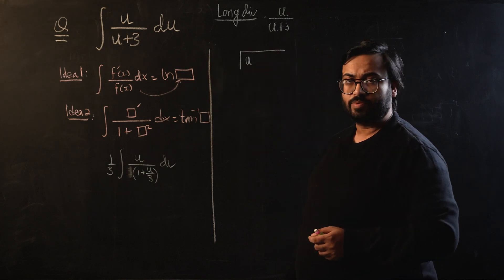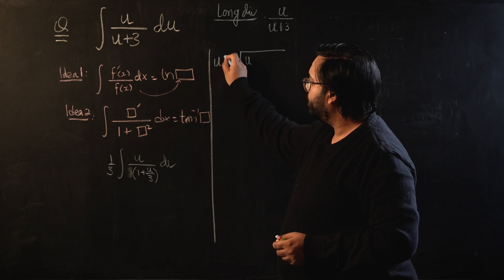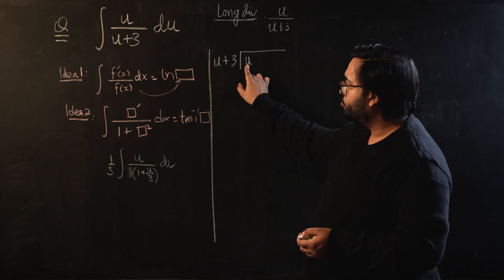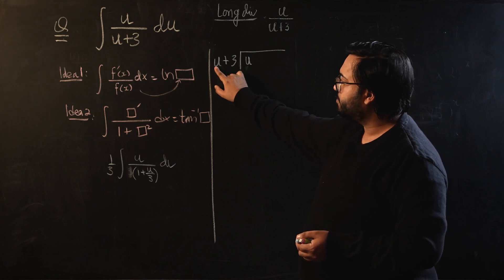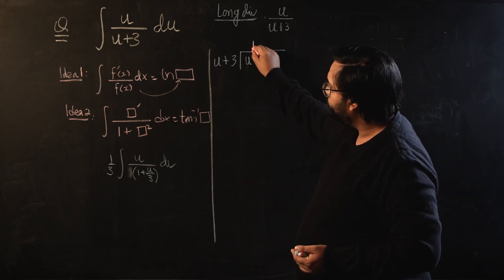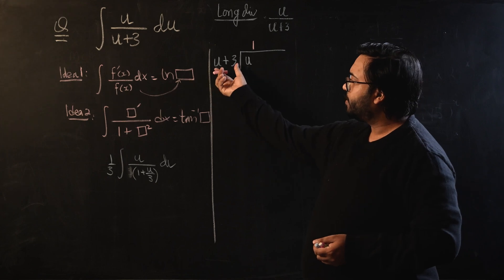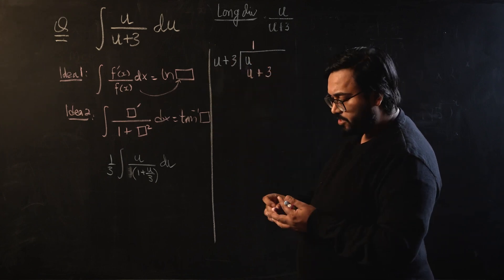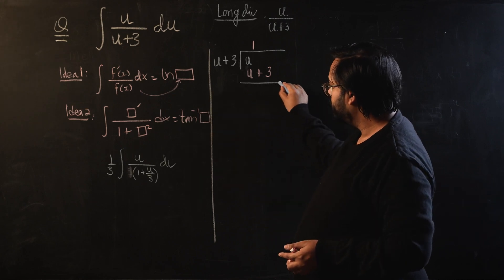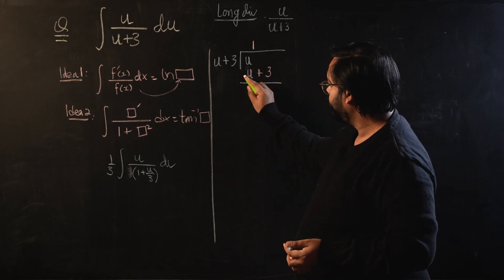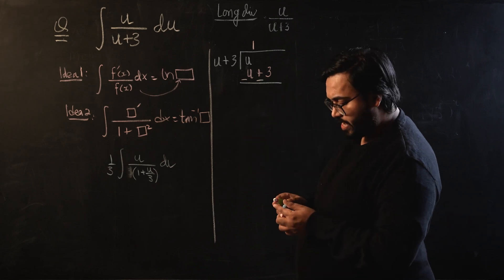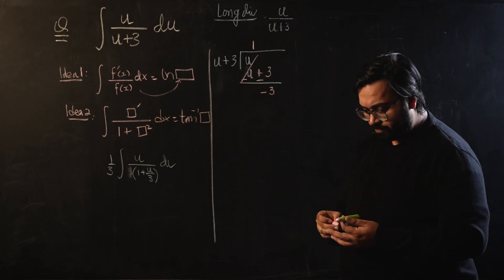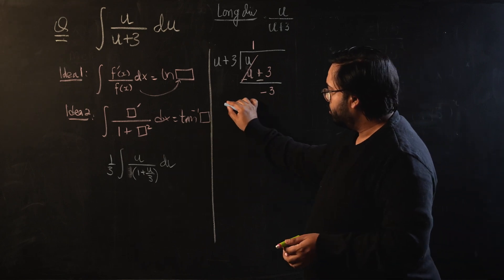I have u in the numerator and u+3 in the denominator. First of all, let's decide the quotient. Quotient is always inner first term divided by outer first term, so I know that the quotient is going to be 1. Let's multiply the divisor with the quotient, that will give us u+3. Let's write it over here, change sign of the lower terms, and let's get rid of these terms. This will be negative 3.